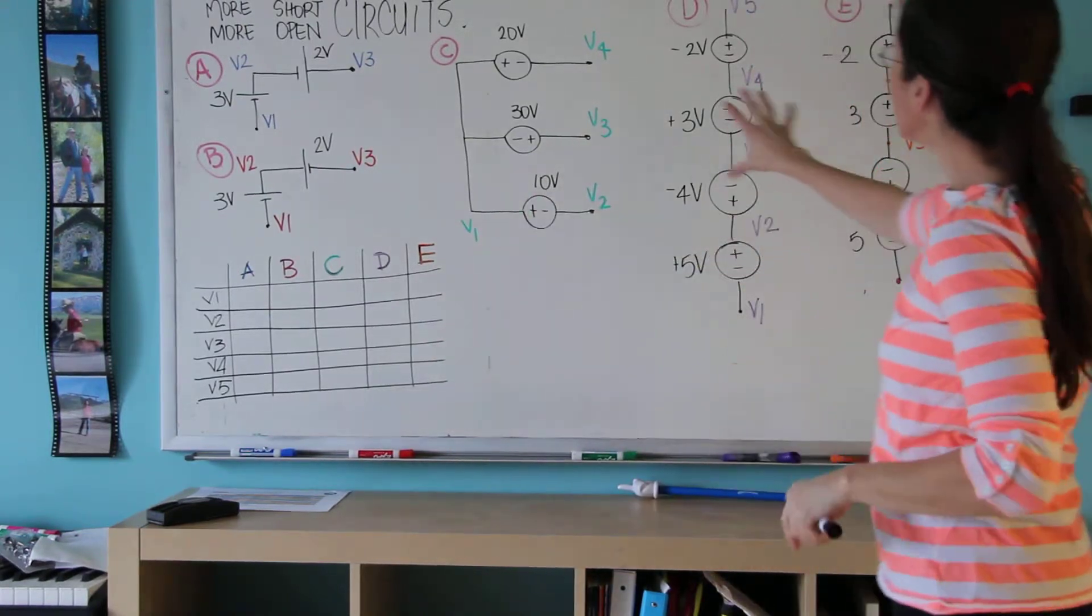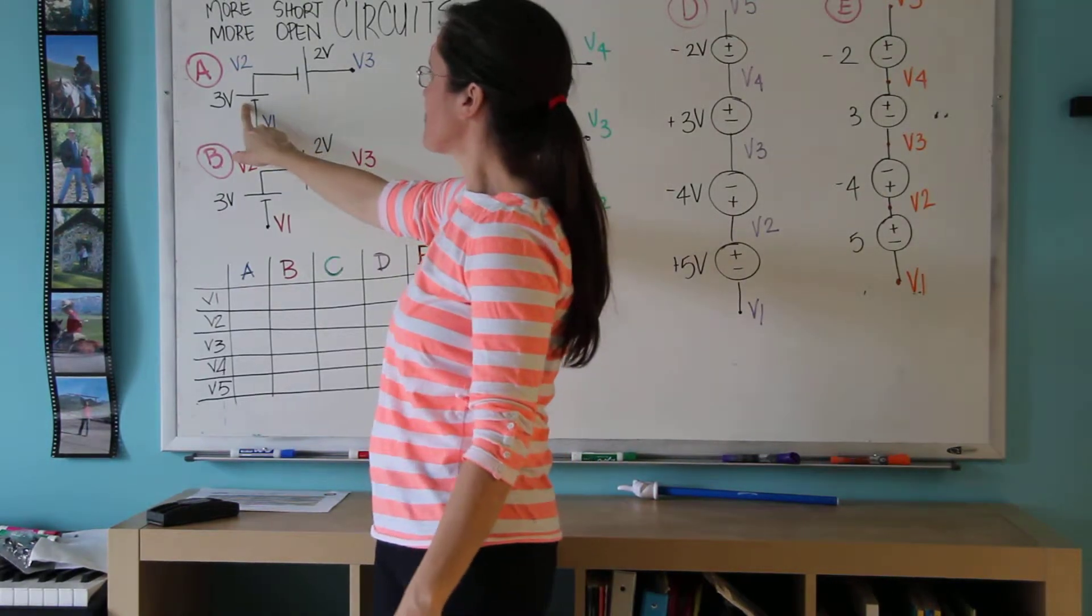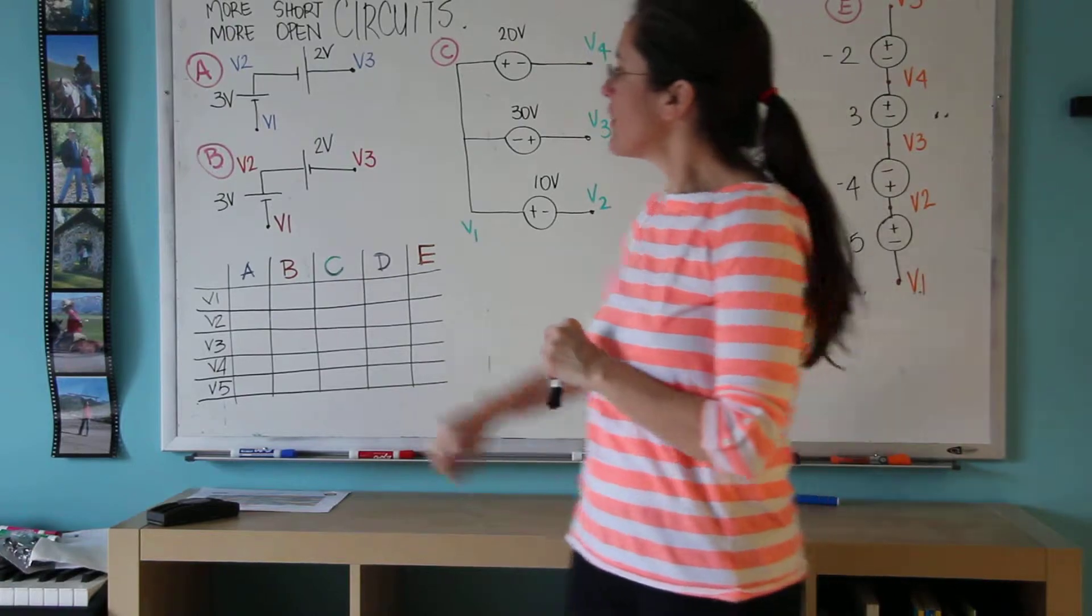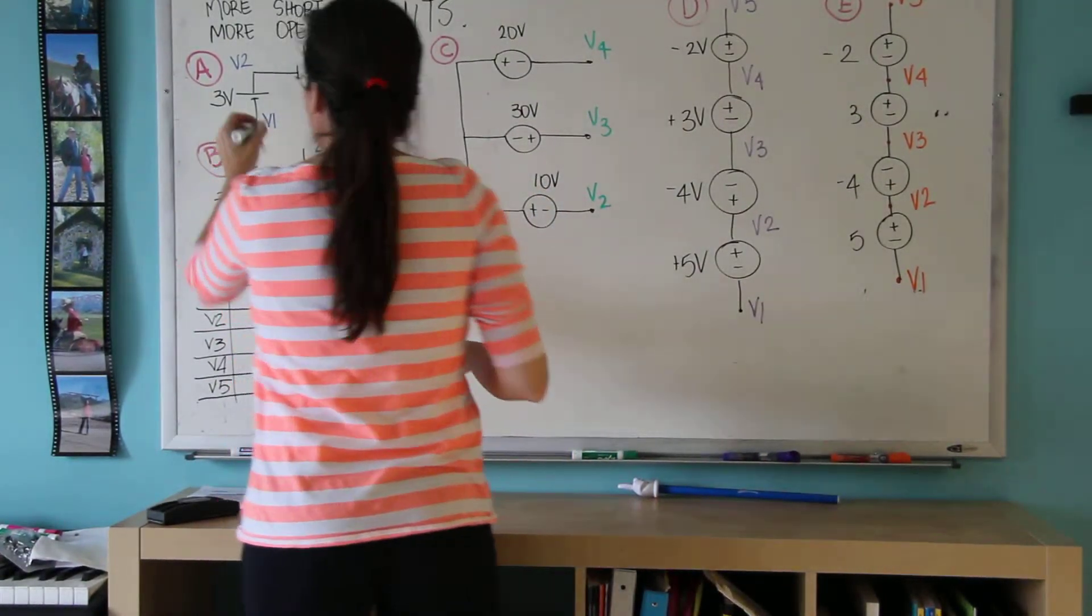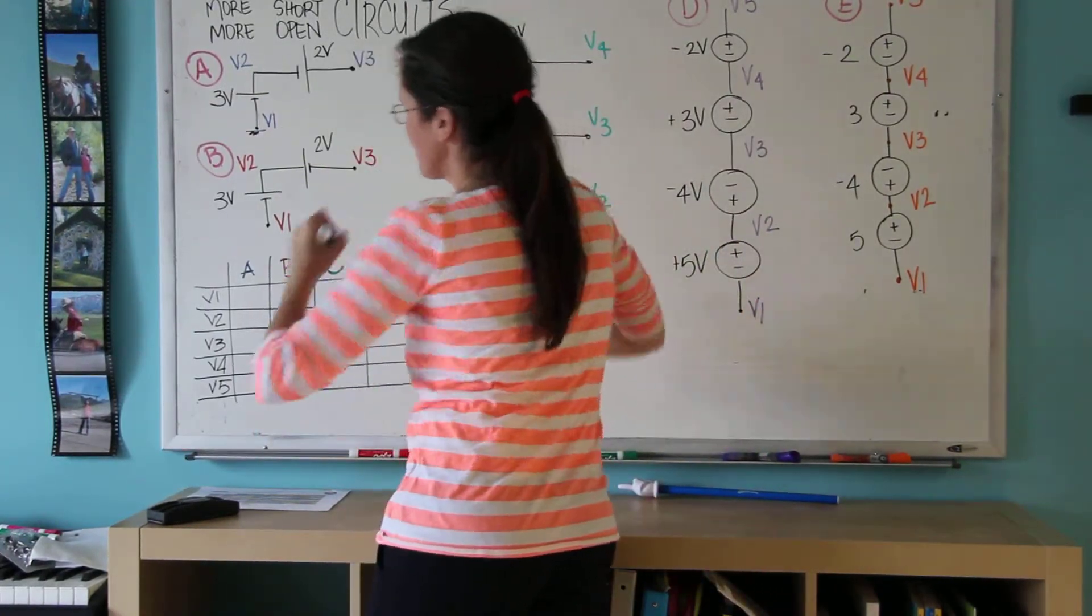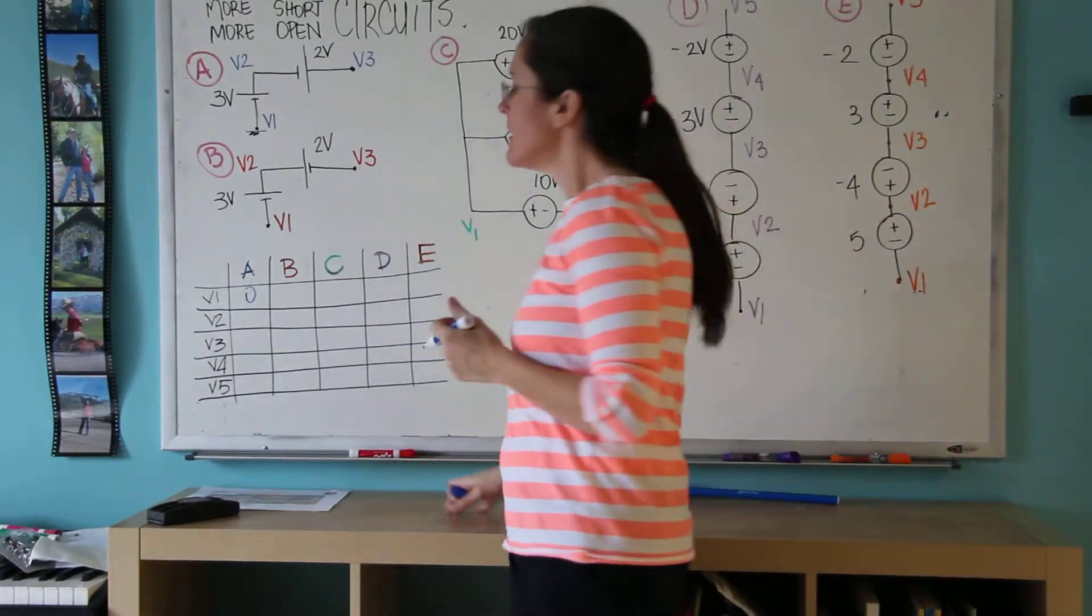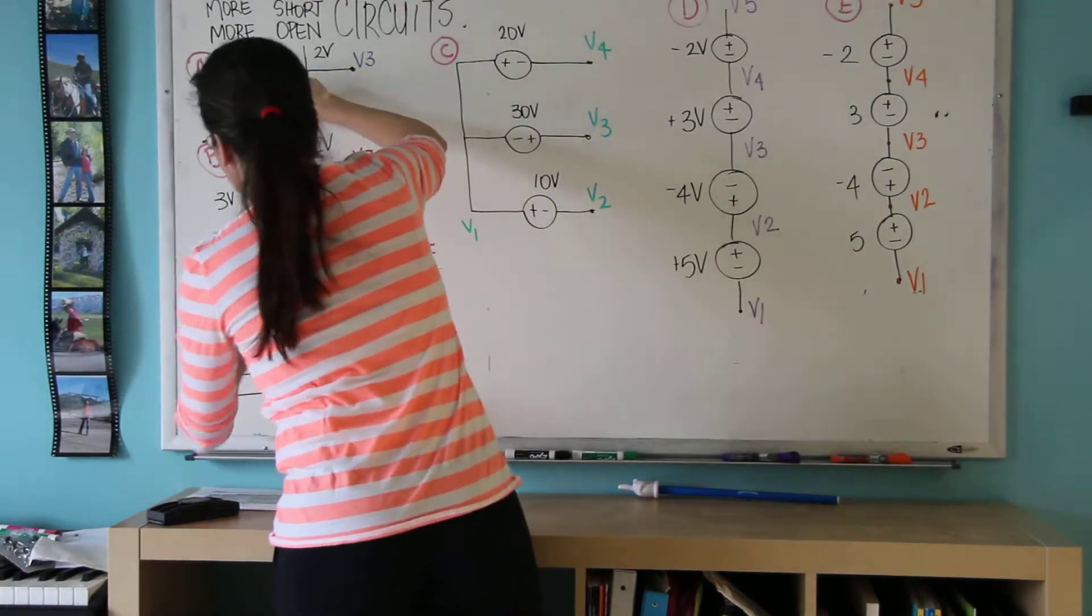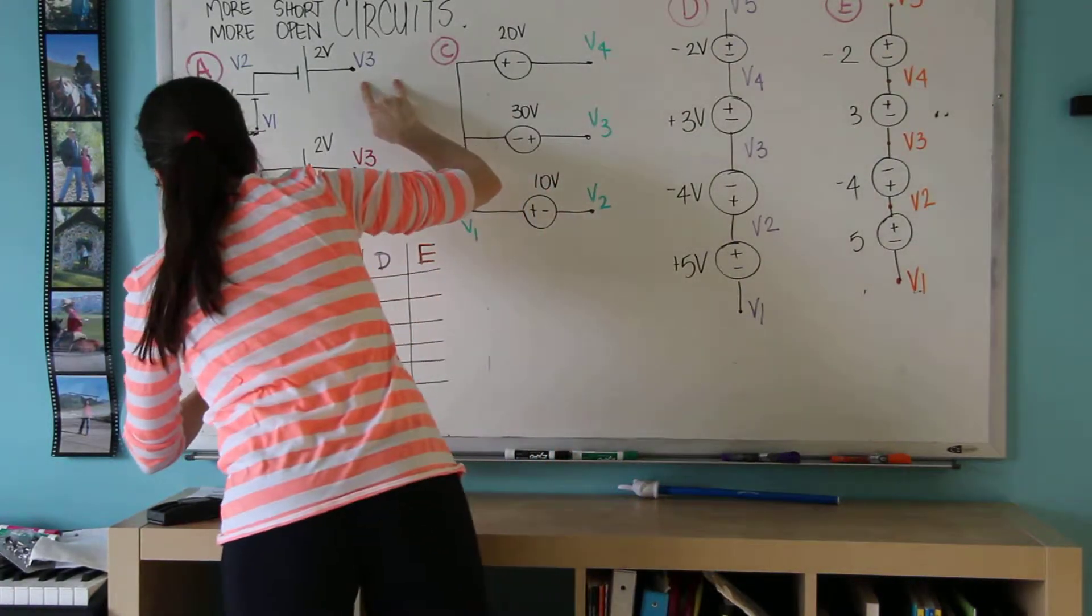So this question, if you get this question as is, this is a 3 volt battery and a 2 volt battery and they are in series. And if I were to put the multimeter with the ground on V1, I'm answering question A, circuit A. V1 is 0, then V2 would be 3 volts above that, and V3 would be 2 volts above V2.